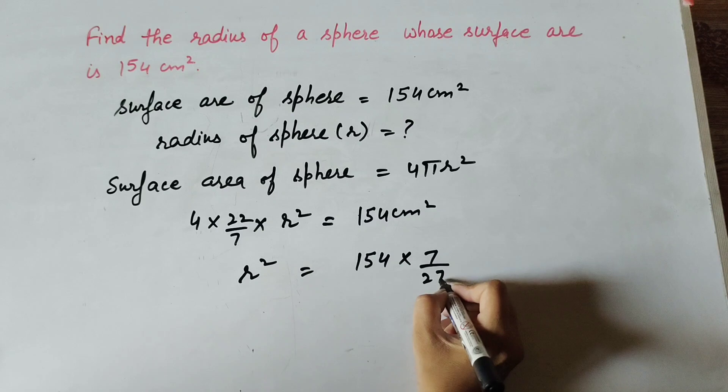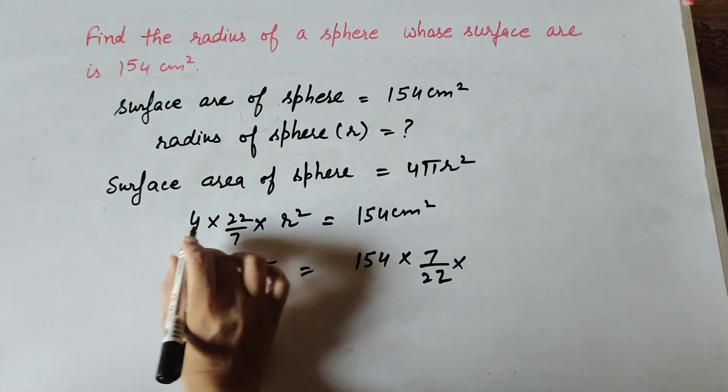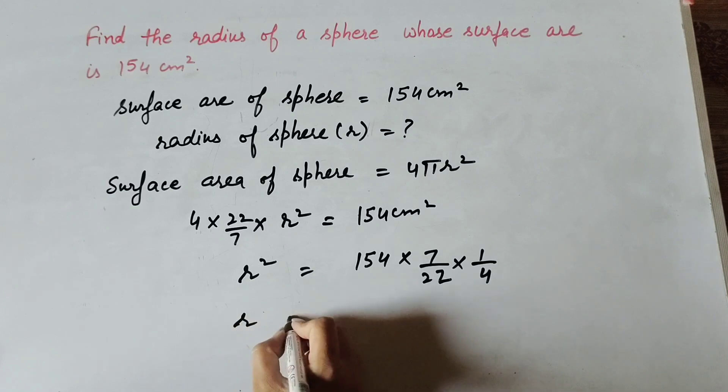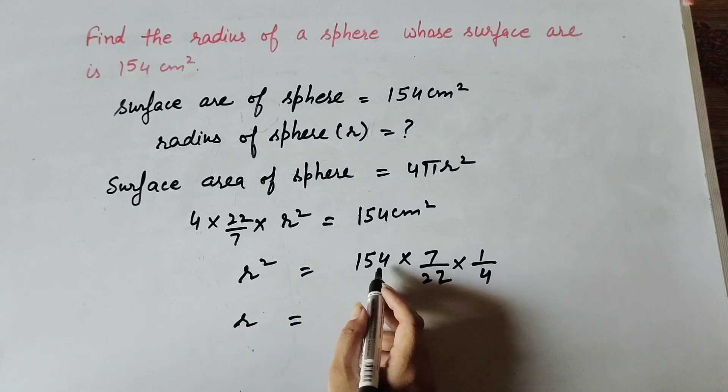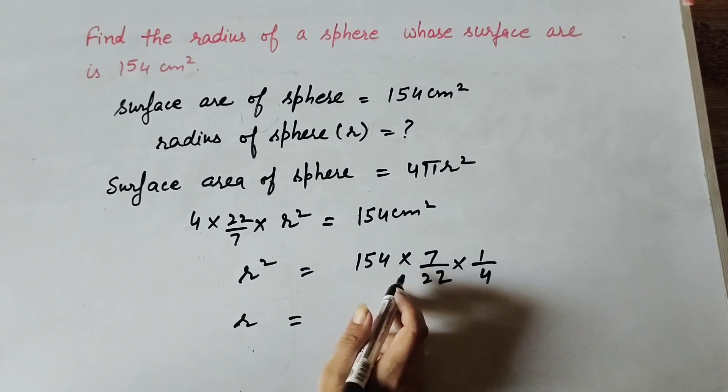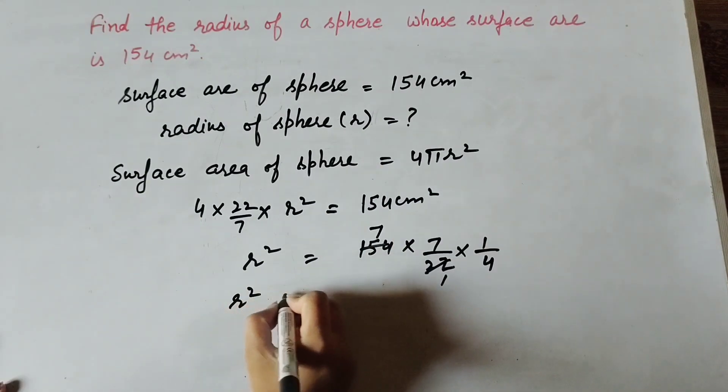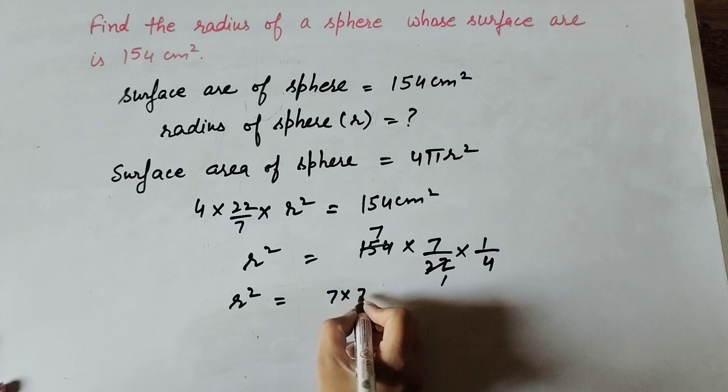transposing to right hand side, 7/22, and 4 transposing to right hand side, 1/4. So 154 divided by 22, we get 7. So r² equals 7 times